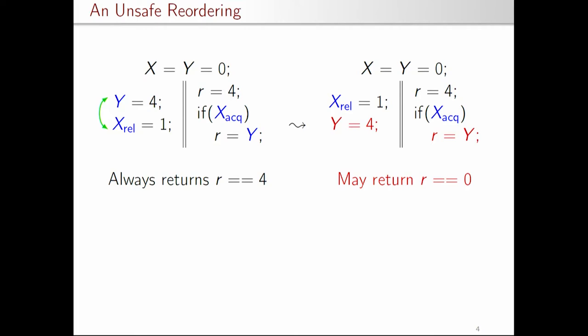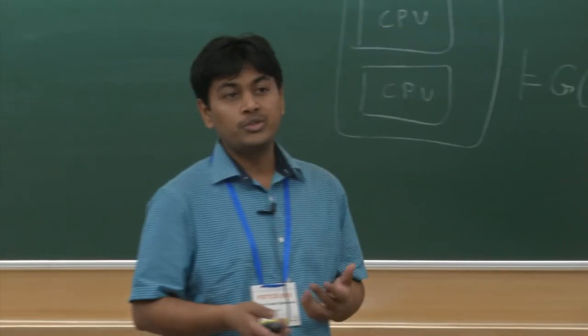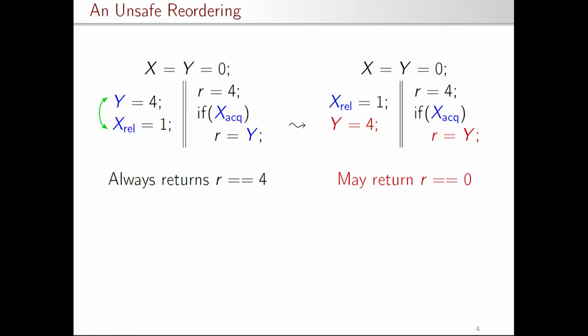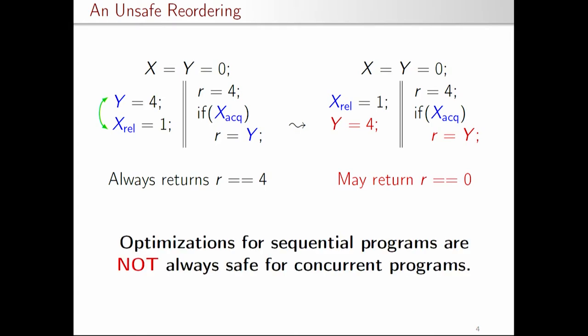Now suppose a naive compiler compiles this program and, finding the accesses in the first thread are independent, reorders them. Once reordered, we can find an execution where X_release takes place first and then X_acquire reads the value, and at that point Y equals 4 has not yet taken place — so it reads from the initial location 0. This introduces a new outcome in the target program that was not present in the source, and also introduces a data race on location Y. The key takeaway is that optimizations correct for sequential programs may not always be correct for concurrent programs.